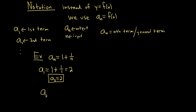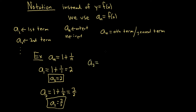Let's look at a_2. This would be 1 + 1/2, so 1 + one-half = two-halves + one-half = 3/2. So a_2 = 3/2. Now a_3 would be 1 + 1/3, which is 3/3 + 1/3 = 4/3. So a_3 = 4/3.